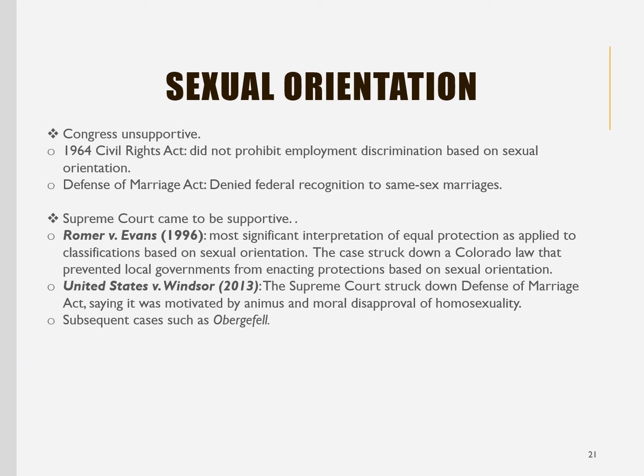Generally speaking, Congress and the courts have been less supportive of non-discrimination based on sexual orientation. In 1964, the Civil Rights Act did not include sexual orientation in the law. In fact, the U.S. government had passed the Defense of Marriage Act, which denied federal recognition to same-sex marriages. As we've seen before in issues such as sodomy laws, at first the courts were also largely unsympathetic. However, over time the Supreme Court became more supportive of claims of sexual orientation-based discrimination. In Romer versus Evans in 1996, the court made maybe the first major step toward protecting people who had been on the fringes of society because of their sexual orientation, most significantly applying equal protection standards to a classification based on sexual orientation.